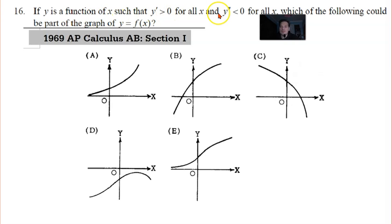Y is a function of x such that y' is greater than 0 for all x and y'' is less than 0 for all x. Which of the following could be part of the graph of y equals f of x? Let's explain why the first one doesn't work. Here from left to right, sure, the slope is positive, but it's also concave up.